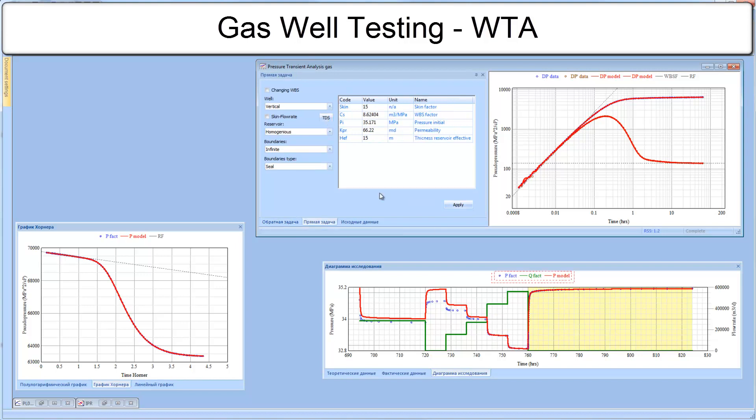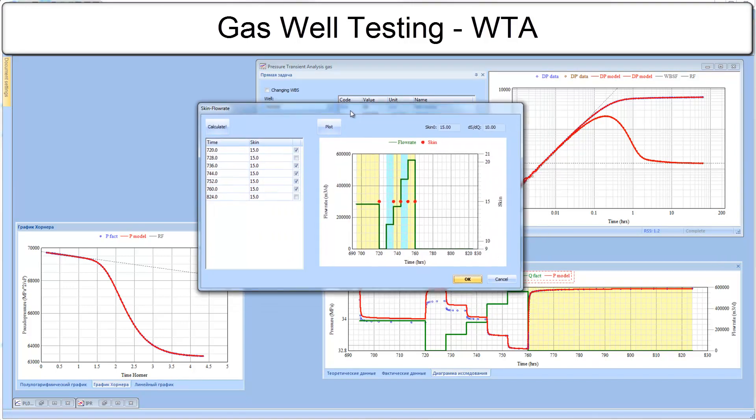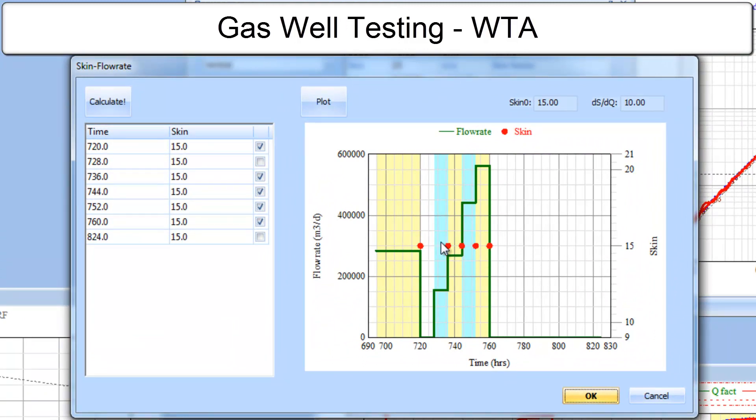Click on time dependent skin button. The resulting skin is very high, 15, and it is constant for the full length of the test, which we know is not true. By clicking calculate, we determine individual skin values for every flow period.